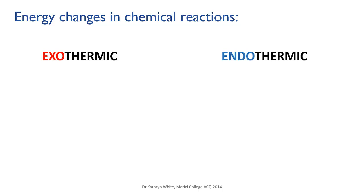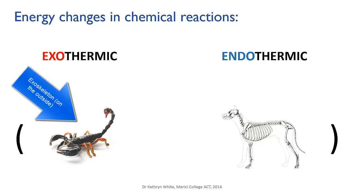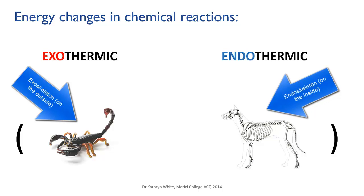If you have trouble remembering which is which, perhaps think of a biology analogy. Insects, spiders, crabs — creatures like that — have an exoskeleton. This means their hard, supportive structures are on the outside, so exo means outside. Whereas vertebrates, including us, have skeletons on the inside, and the proper name for this is an endoskeleton. So endo means inside.